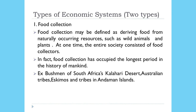Economic systems are basically divided into two important types: food collection and food production. Food collection is defined as deriving food from naturally occurring resources such as wild animals and plants. At one time the entire society consisted of food collectors, and food collection has occupied the longest period in the history of humankind. For example, certain tribal communities were engaged in collection of food — like the Bushmen of South Africa's Kalahari Desert, the Australian tribes, the Eskimos, and tribes in Andaman Islands — were all involved in traditional food collecting.